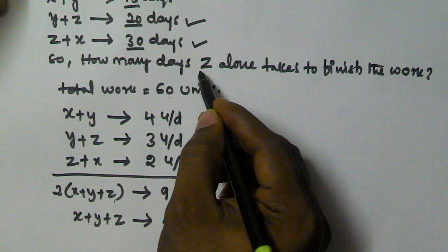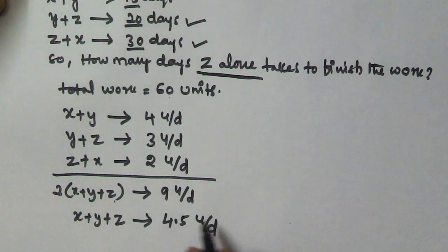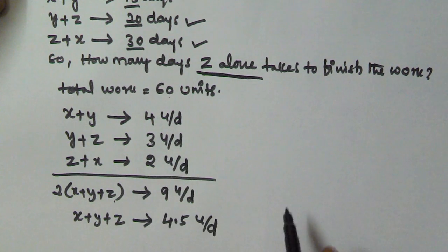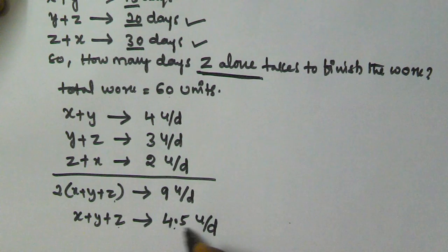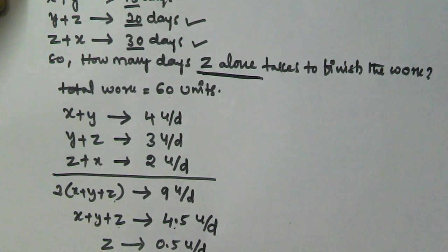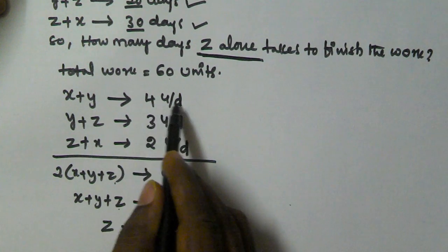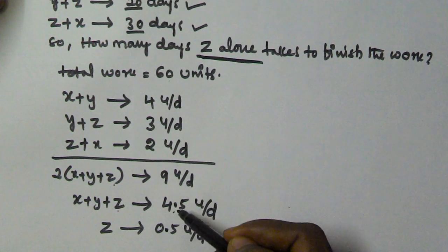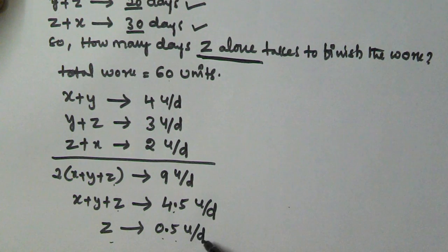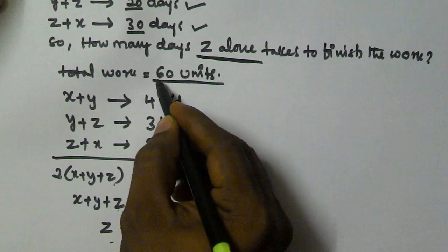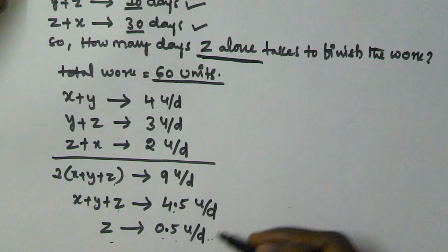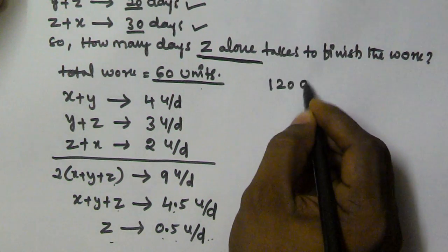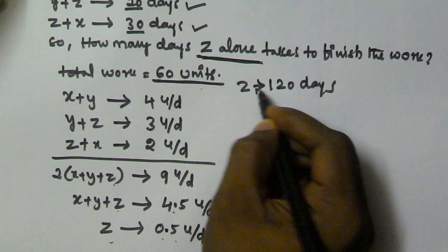Now we have to find how many days Z alone takes to finish the work. We know X and Y finish 4 units per day, and X, Y, and Z together finish 4.5 units per day. So Z alone finishes 0.5 units per day — we subtract 4 from 4.5 to get Z. The total work is 60 units, so if Z finishes 0.5 units per day, he is going to take 120 days. Z alone finishes the given work in 120 days.